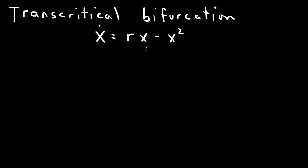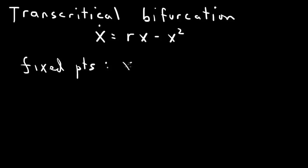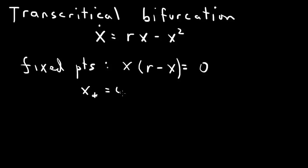To analyze the transcritical bifurcation, we first look at the fixed points of this differential equation — that's when the right-hand side equals zero. So rx minus x squared equals zero. We can factor out an x to get x times (r minus x) equals zero. So there are two fixed points: x-star equal to zero, and x-star equal to r.